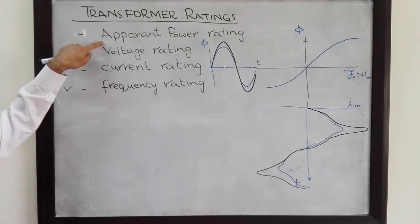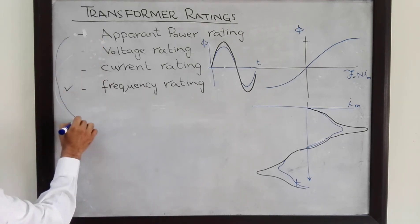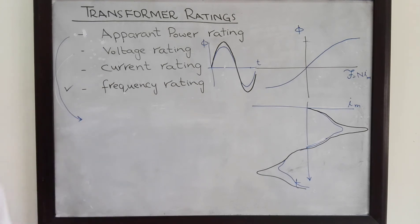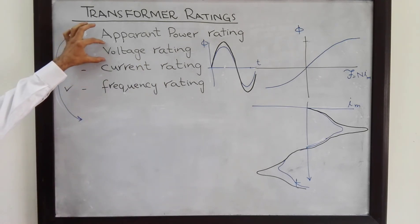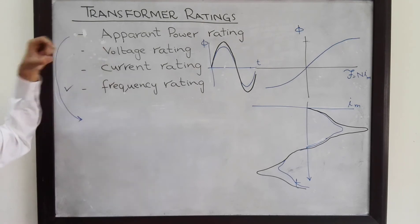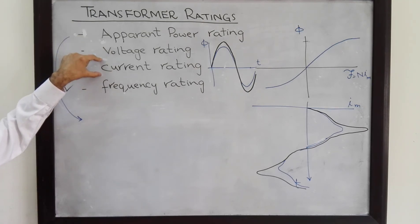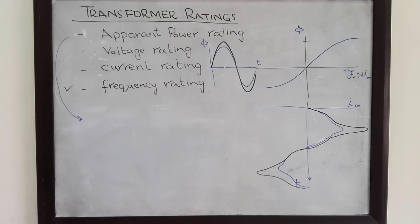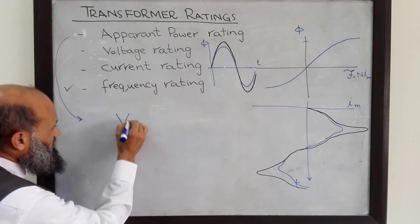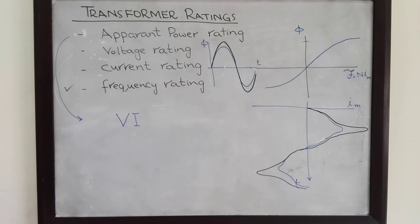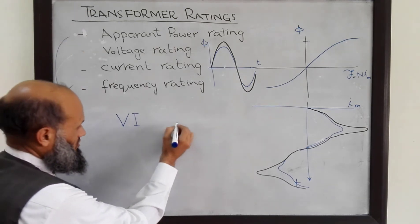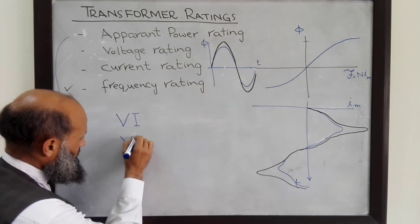Another very important rating of transformers is the apparent power rating. Power ratings of electrical machines are always provided in apparent power. There is a maximum voltage that can be applied to the transformer and a maximum current that can flow through the transformer. Therefore, there is a limit on their product, V×I, and that product is the apparent power rating for a transformer — this is the volt-ampere rating.